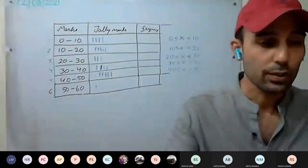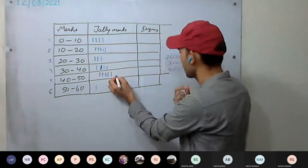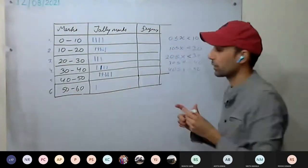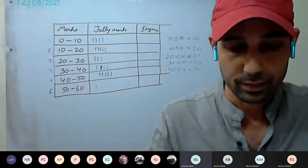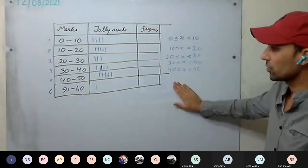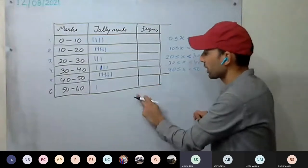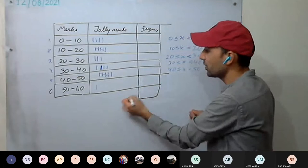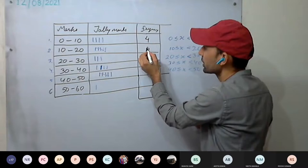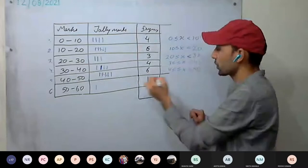Many books will consider 50 in the last class and you can do it that way as well. Now total the frequencies. There is no need to write an extra class — this is just for checking. Total them once: how many are you getting?